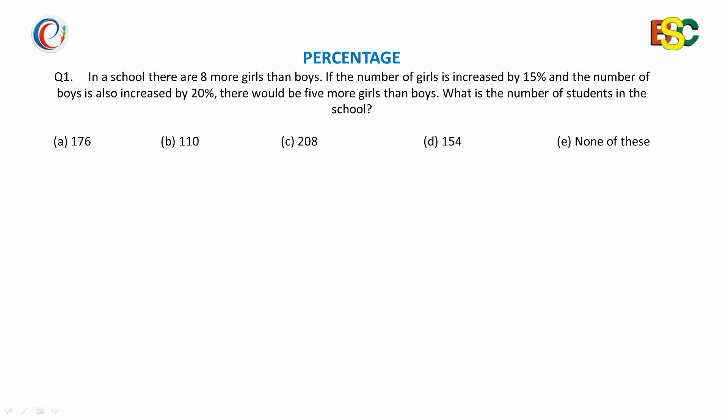In this question, it is clear that the number of boys and the number of girls have a difference. The number of girls is 8 more than boys. Suppose the number of boys is x, then girls would be x plus 8.